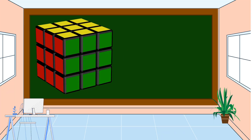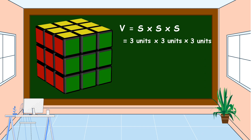Look at the Rubik's cube. How many rows are there? It has three rows. How many columns are there? It has three columns. What is the height? The height is three units. To find the volume, we use the formula: volume equals side times side times side. Three units times three units times three units — the volume of this cube is 27 cubic units.